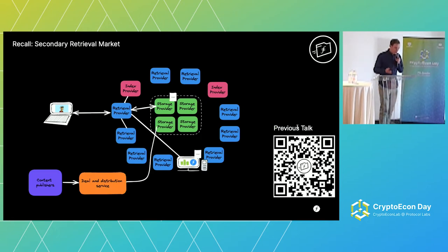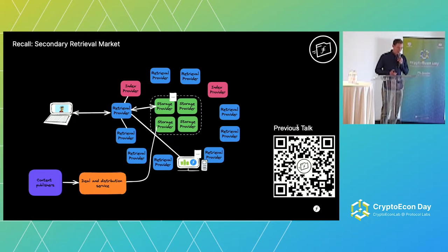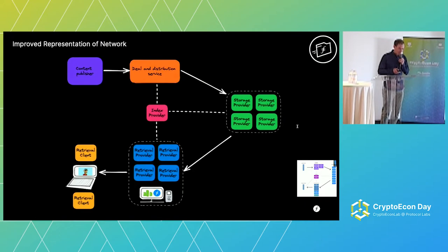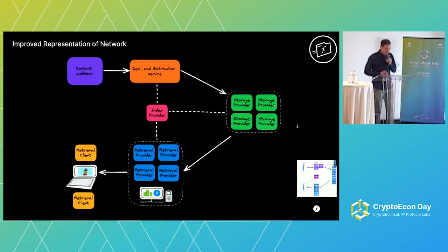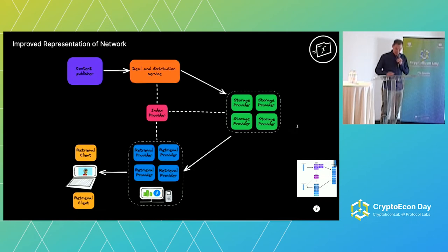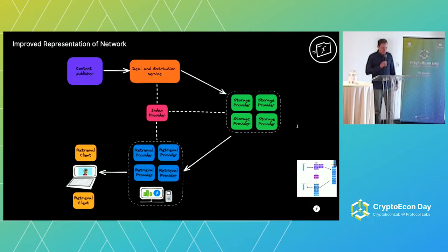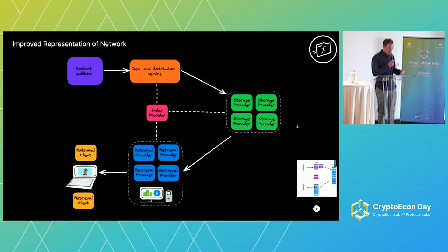At the end of my previous talk, we ended on this diagram — there's a link to it in this slide. Since watching one of Juan's more recent presentations, he expressed the diagram in a much tidier way, so his diagram is on the right. I've taken that and turned it into my theme. I'm going to talk through this diagram quickly because it's really important to understand for what we're going to discuss today. Top left, we've got the content publishers, sometimes called storage clients — the people who want to actually store data in the Filecoin network.